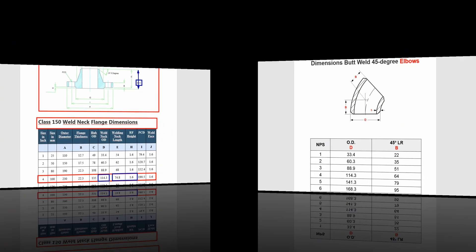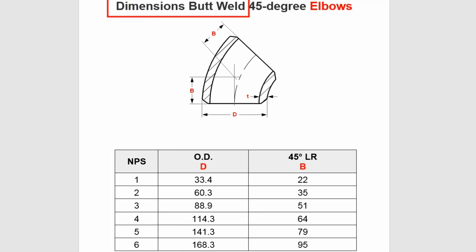Now let's look at the dimensions chart of 45-degree butt weld elbows. NPS is nominal pipe size of 45-degree butt weld elbow and shows on this column. D is outside diameter of 45-degree butt weld elbow and shows on this column.